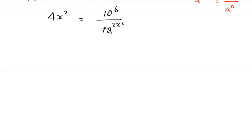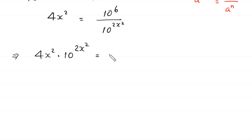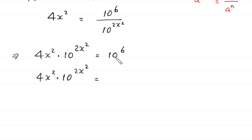Multiplying both sides by 10 to the power 2x squared gives 4x squared times 10 to the power 2x squared equals 10 to the power 6. Now 10 to the power 6 is equal to 1,000,000.